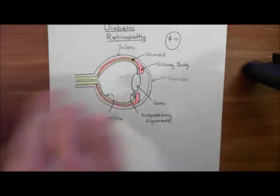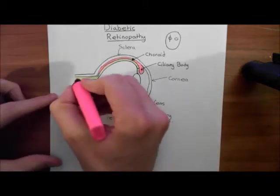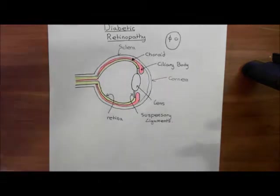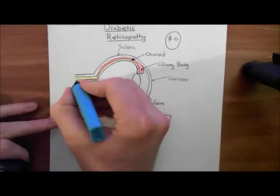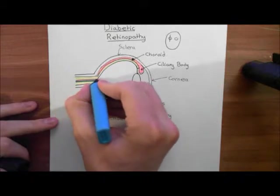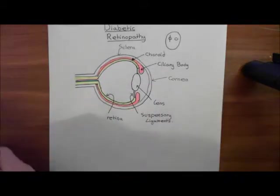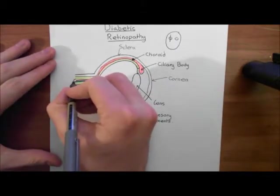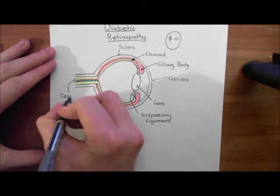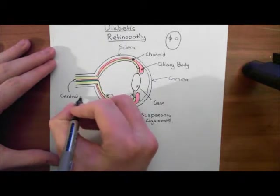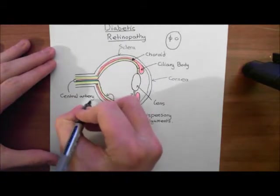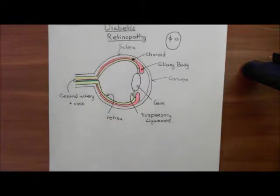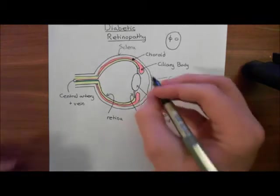And then through this central canal in the middle here, what we will have is an artery coming through, which is called the central artery, and then a vein also coming through. These are the artery and the vein which supply the retina. So these are the central artery and the central vein of the retina.